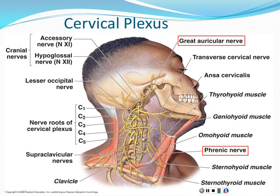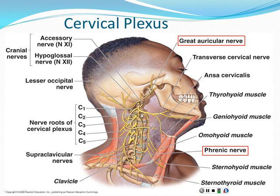In cardiothoracic surgery, clinicians are always careful to identify and preserve the phrenic nerve, because without it one side of the diaphragm stops working. There is a left and a right phrenic nerve, and both emerge from the cervical plexus. Even though the diaphragm is way down in the trunk, the nerve that controls it originates all the way up in the neck and then courses down.